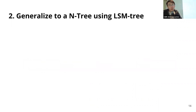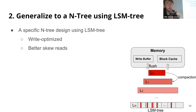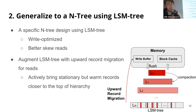If we follow up on the two-tree architecture, we can naturally extend it to an N-tree architecture where N is greater than two. The LSM tree is kind of like N-tree in that it is already a multi-tree structure, but it only moves data downwards, so it is suboptimal for certain skewed read workloads. We propose a specific N-tree design by slightly modifying an LSM tree that preserves the write-optimized property but also provides better skewed reads. The modification we made is to augment an LSM tree with upward data migration at the record level for reads, actively bringing up stationary and warm records to be closer to the top of the tree hierarchy.